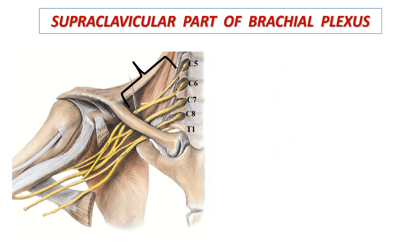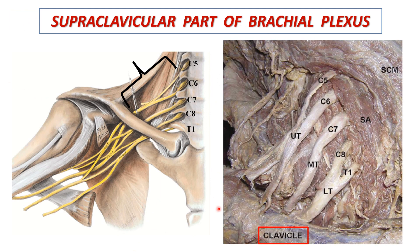Now let's see the composition of the supraclavicular part of the brachial plexus. Here is the clavicle, and here is the supraclavicular part of the brachial plexus in the posterior triangle of the neck region. It consists of all the roots and trunks of the brachial plexus.